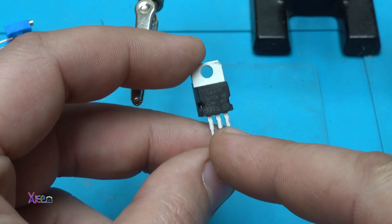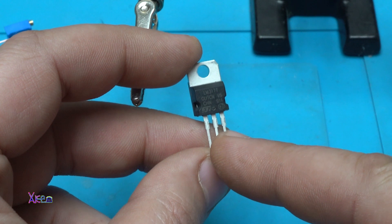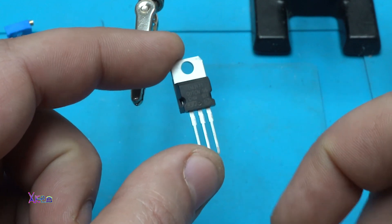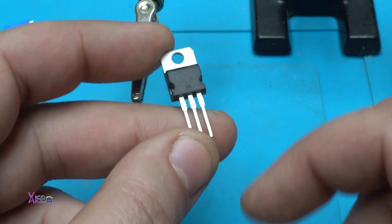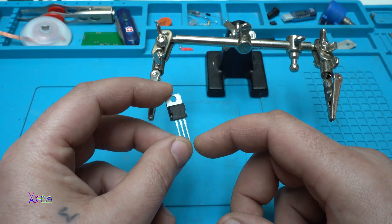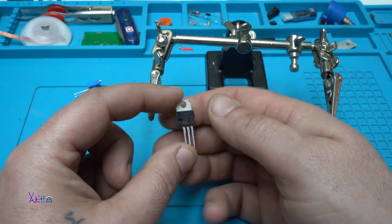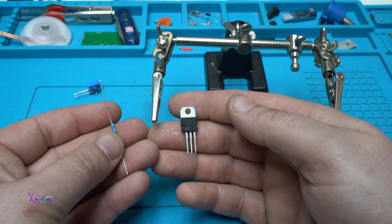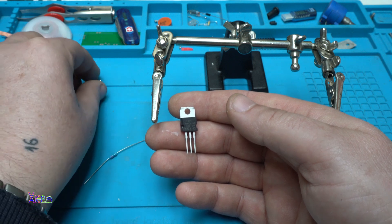LM317, a voltage regulator that can handle 1.5 amperes maximum if you add a heatsink. As I said, it's an adjustable voltage regulator, and I'm going to make a simple voltage regulator using this 220 ohm resistor for adjusting the current.